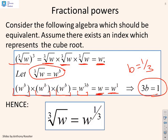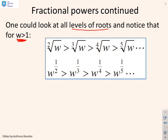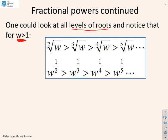And hence, here's our result, the cube root of w is w to the power 1 third. Now I could follow this same analogy for all levels of roots, things like fourth roots, fifth roots, the 2 thirds root and so on. Now I'm going to assume here that w is bigger than 1 just for convenience and what you will find is the square root of w is bigger than the cube root of w, is bigger than the fourth root of w, is bigger than the fifth root of w and so on. In other words, w to the half is bigger than w to the third, is bigger than w to the quarter, is bigger than w to the fifth and so on.